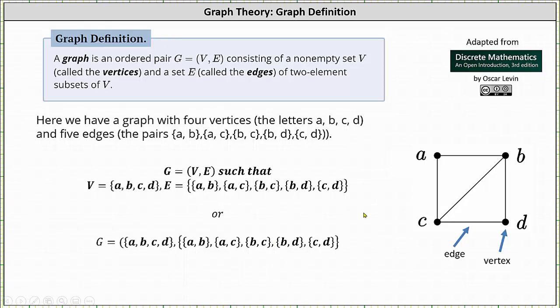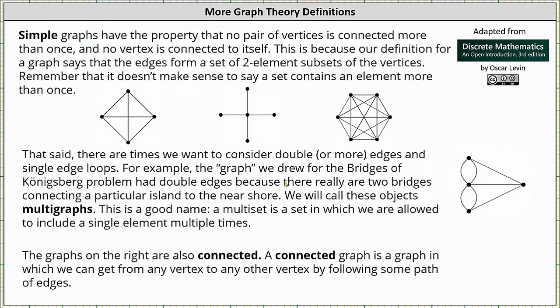And now let's talk about some additional definitions. Simple graphs have the property that no pair of vertices is connected more than once, and no vertex is connected to itself. This is because our definition for a graph says that the edges form a set of two element subsets of the vertices. Remember that it doesn't make sense to say a set contains an element more than once.